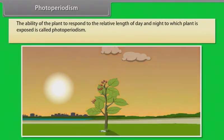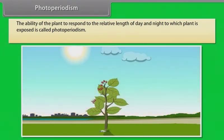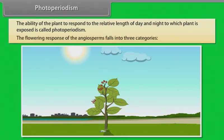Photoperiodism. The ability of plants to respond to the relative length of day and night to which the plant is exposed is called photoperiodism. The flowering response of the angiosperms falls into three categories.